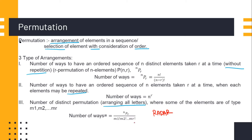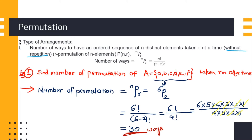Let's take an example of the first case, where you are not considering repetition — just taking r elements in a sequence from a group of n elements. Find the number of permutations of set A, which has elements {a, b, c, d, e, f}, giving a total of six elements, and we have to take r = 2 at a time.